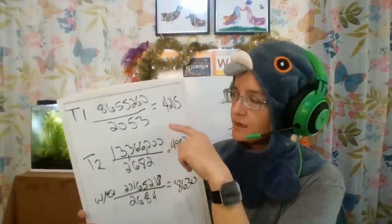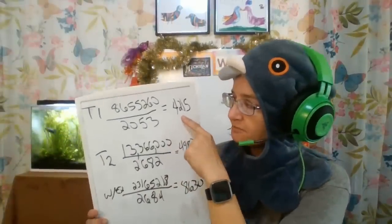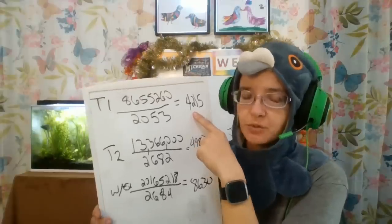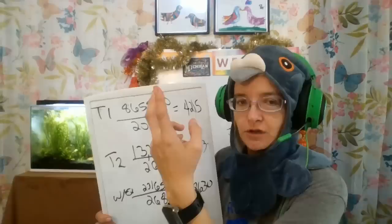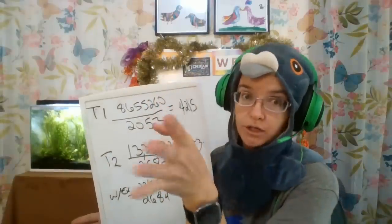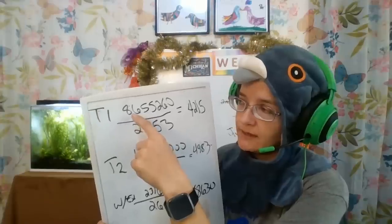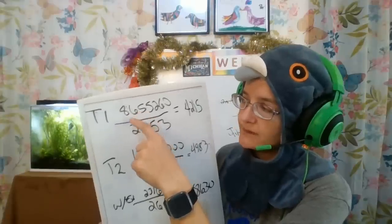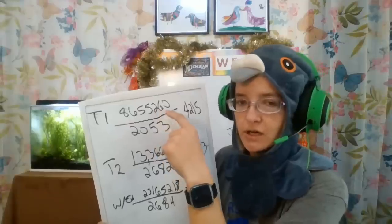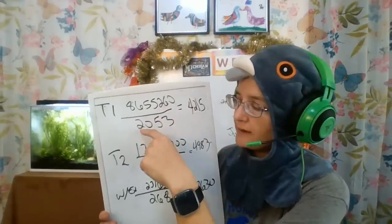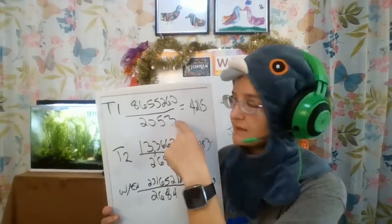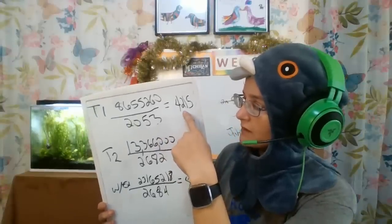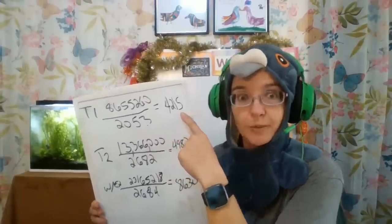Here's our first model. I took out the outliers, which were about 14 million shares — the two largest reported shareholders. Basically, 8.655 million shares divided by 2,053 shareholders gives you, on average, 4,215 shares per person.